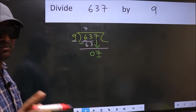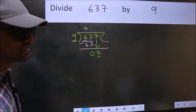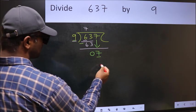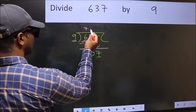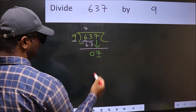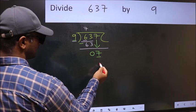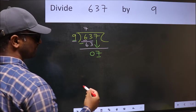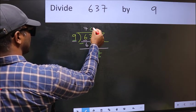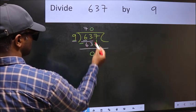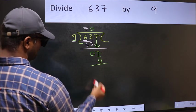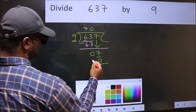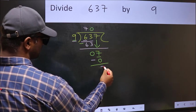Instead, what you should think of doing is: which number should we take here? If I take 1, we will get 9. But 9 is larger than 7. So what we should do is take 0. 9 times 0 is 0. Now, you should subtract. 7 minus 0 is 7.